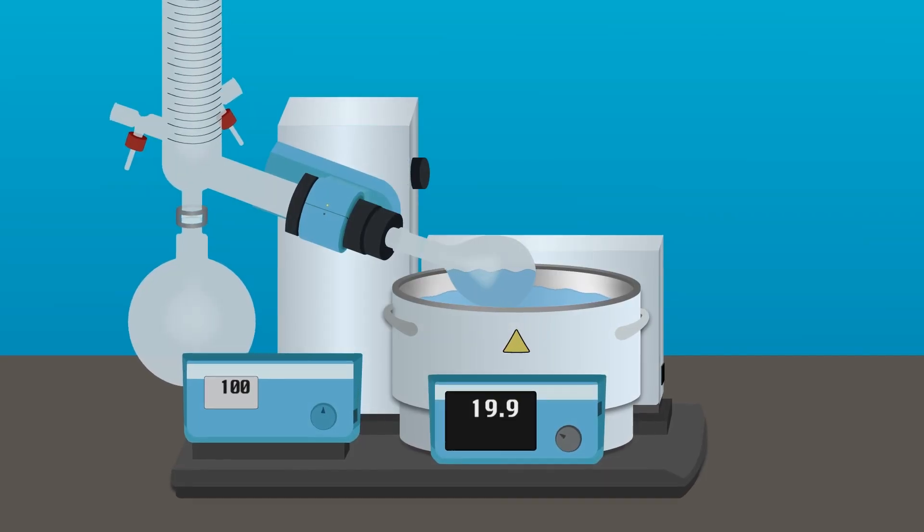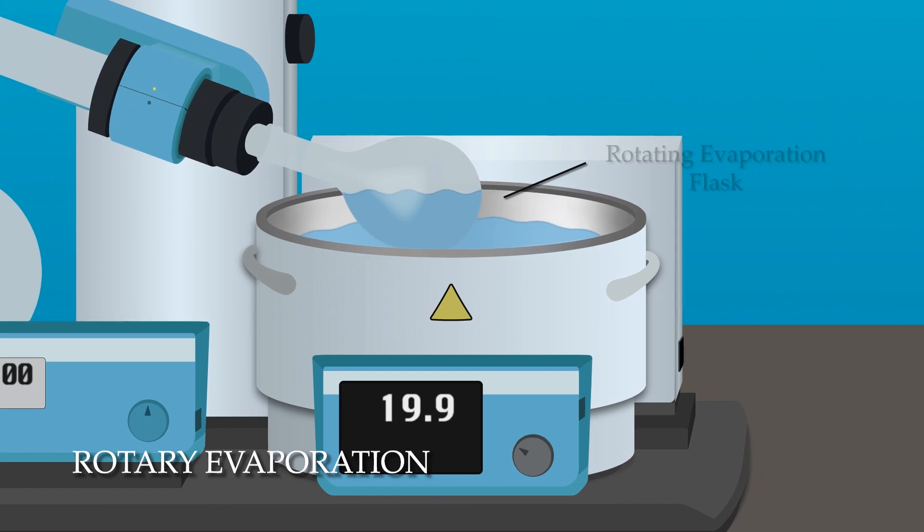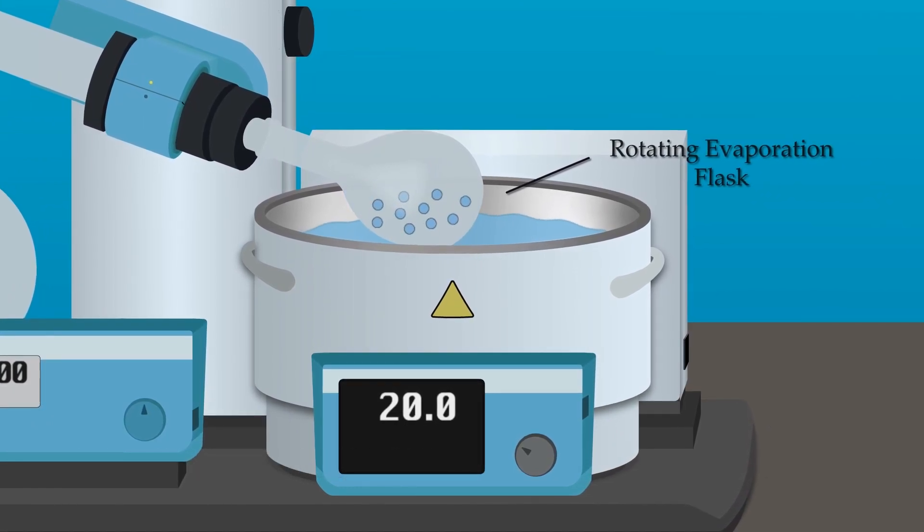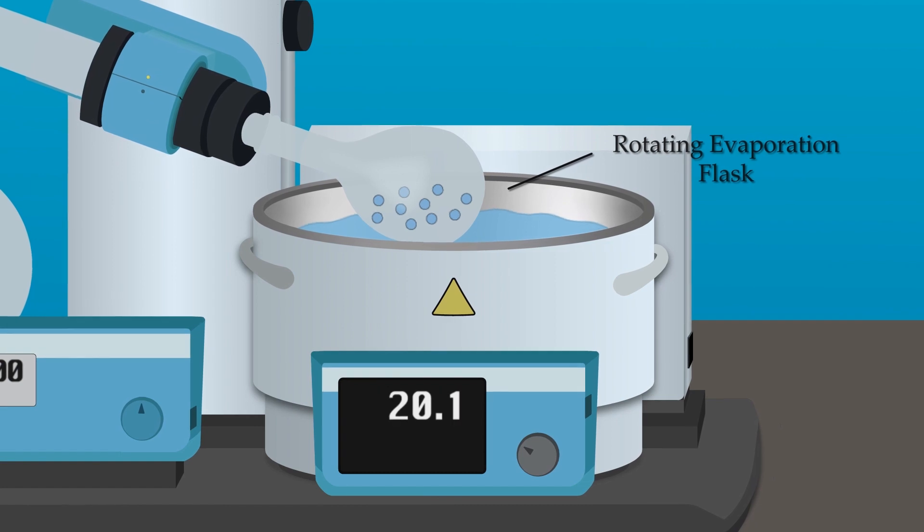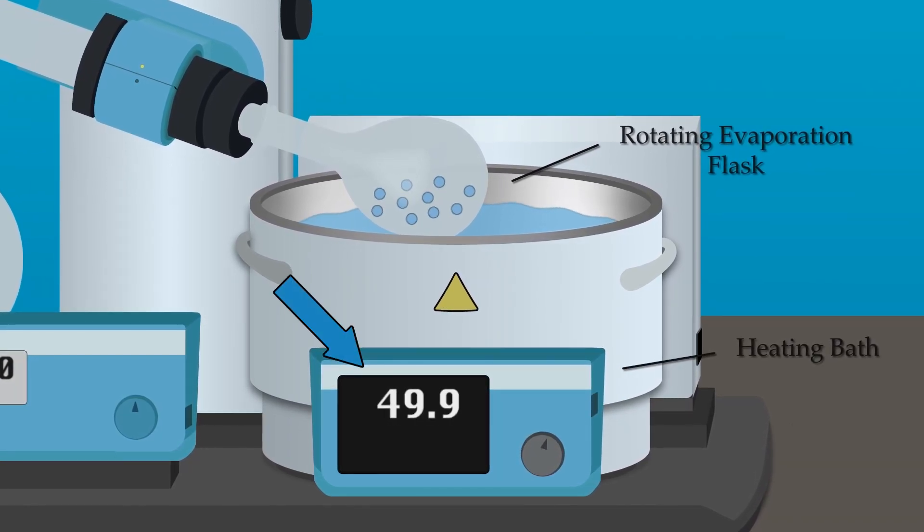Now let's compare that to rotary evaporation. We'll start with a large liquid sample in a round flask which will be hooked up to a rotary evaporator unit. This flask will sit in a heated water bath causing the solvent molecules to speed up and vaporize at an accelerated rate.